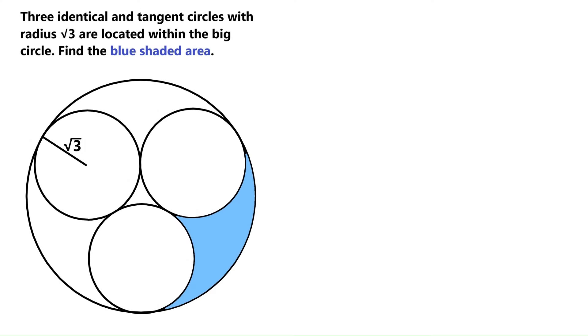This is one of the coolest circle area problems you will ever see. In this one we have this big circle and it's got three smaller and identical circles tightly crammed into it. And the radius of each small circle is radical 3. And we need to find the area of this blue region over here.